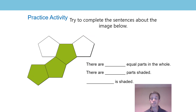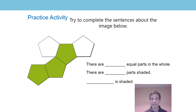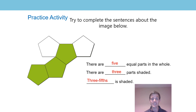Now I have an activity I'd like you to have a try at. I'd like you to complete the sentence stem about the image that you can see. Pause the video and have a try. Let's check if you are right: there are five equal parts in the whole, and there are three parts shaded, so that means three-fifths is shaded. Well done.